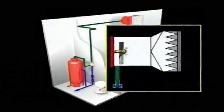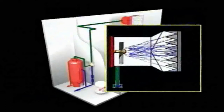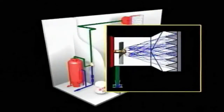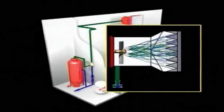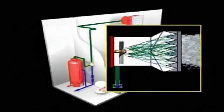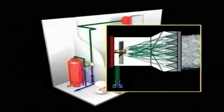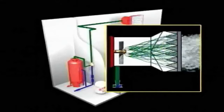The foam solution is routed from the proportioner outlet to one or more high expansion generators located in the hazard area. Within the foam generator, rotating nozzles spray the solution onto a perforated screen in a circular pattern. Simultaneously, the water-driven fan blows a high volume of air onto the same screen, producing the expanded foam.